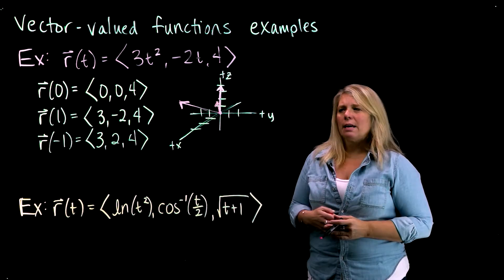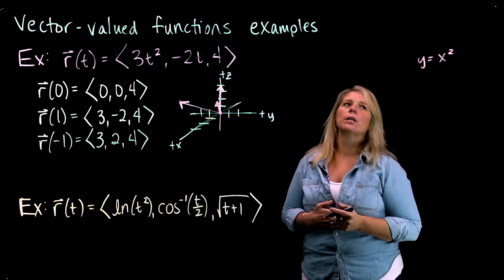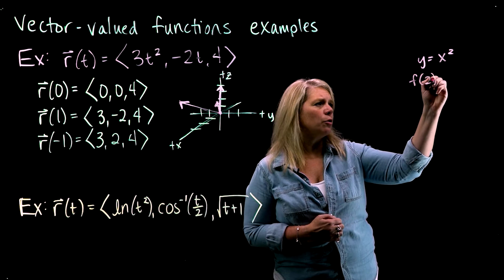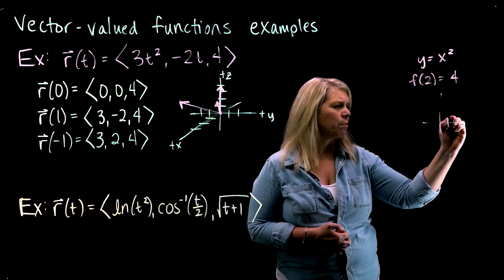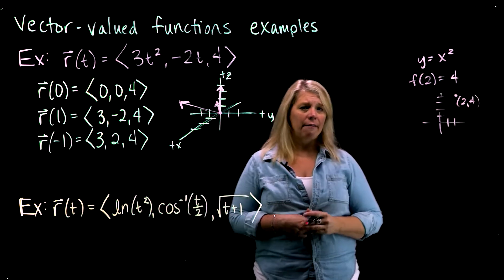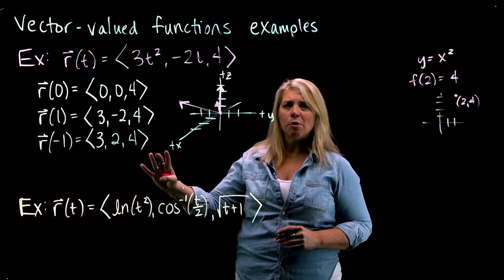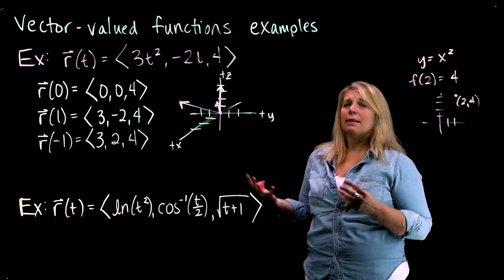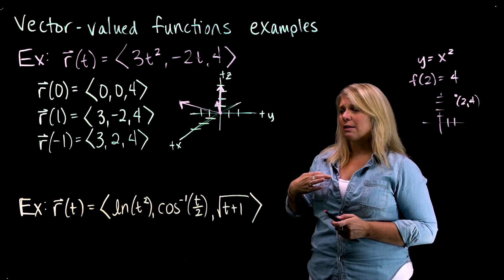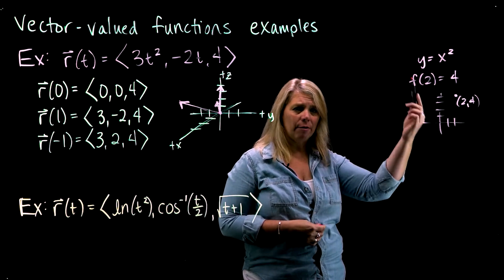One thing to notice about graphing these: when you graph an ordinary function like y equals x squared, you have a place for your input axis and your output axis, so when you input 2 and get out 4, you can graph that as the ordered pair (2, 4). But with these vector-valued functions, I need 3 dimensions just to graph the outputs, which means there's no axis left for the inputs. So you don't graph them in exactly the same way as ordinary functions.